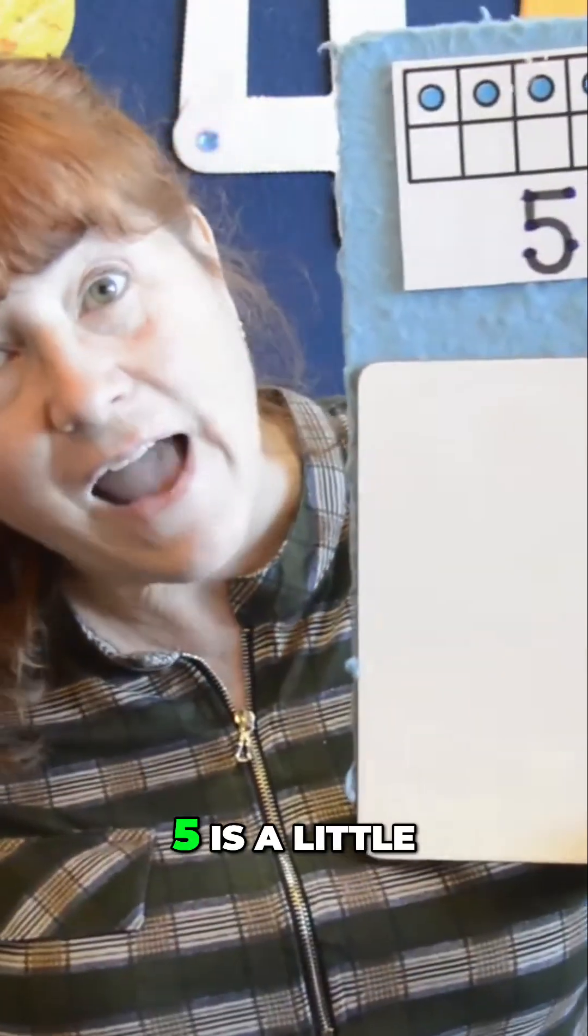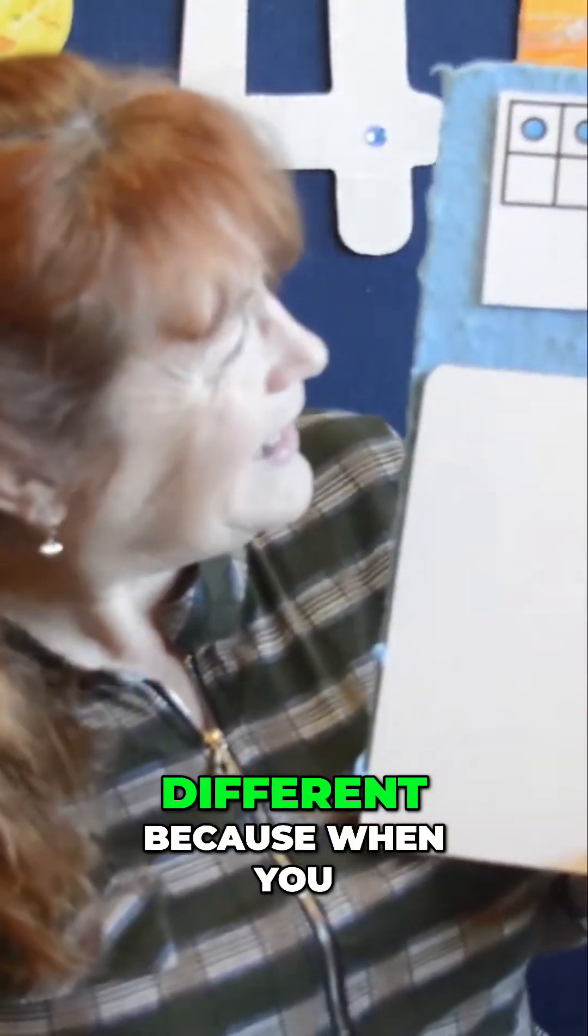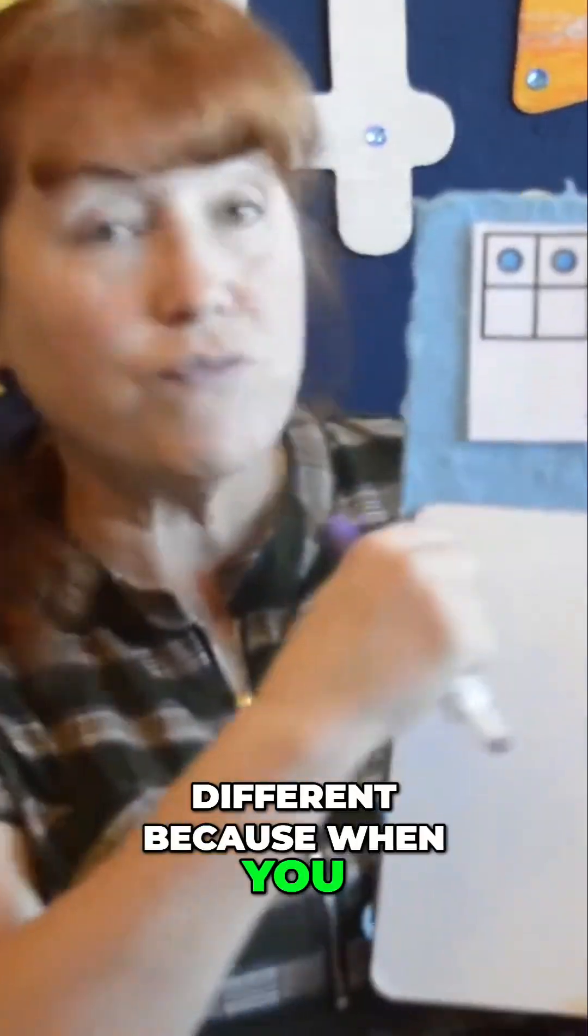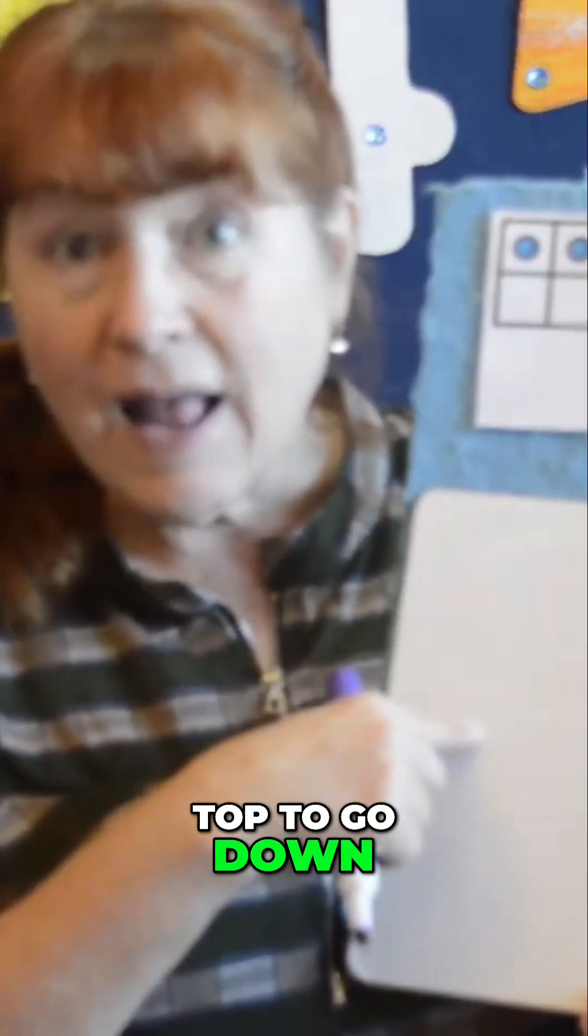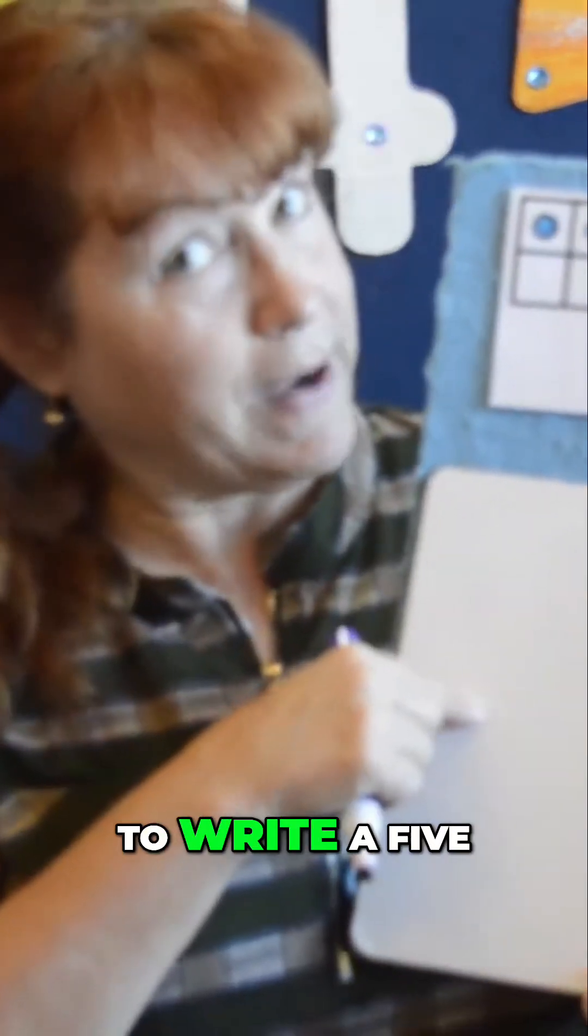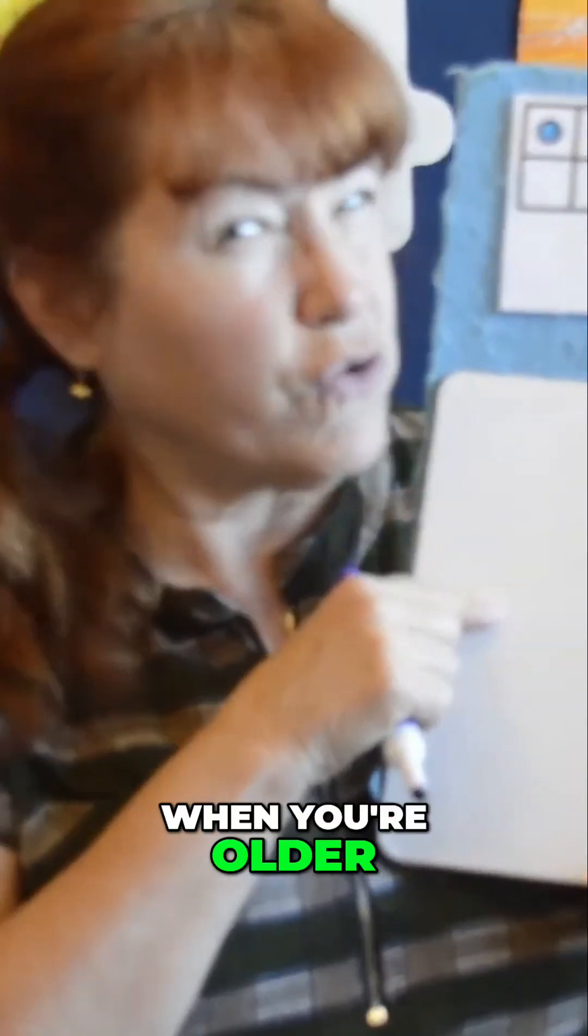Are you ready to see it? Five is a little different because when you write a five you start at the top to go down. That's the correct way to write a five. When you're older you can write it any way you want, but when you're first learning you start at the top.